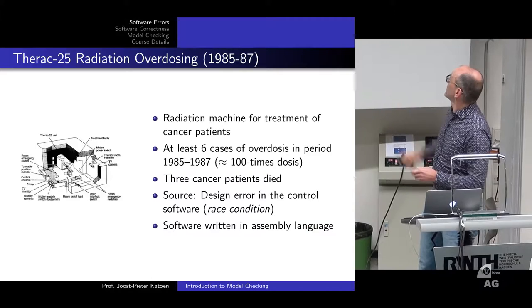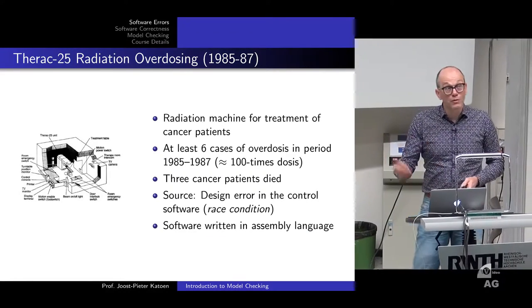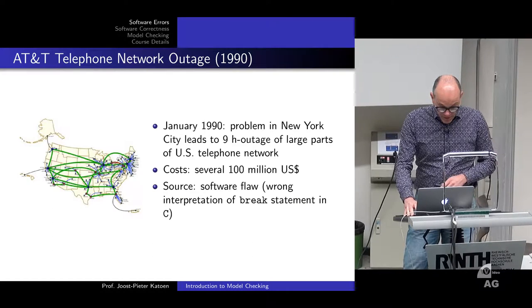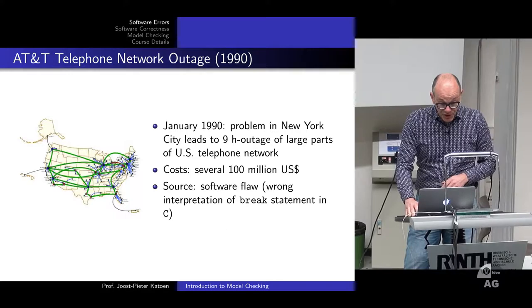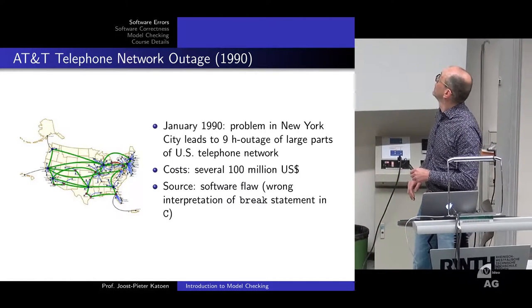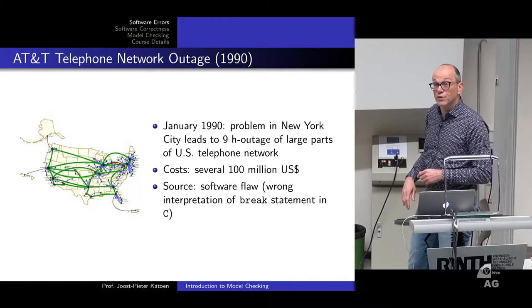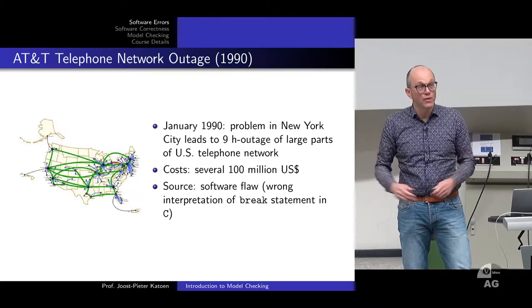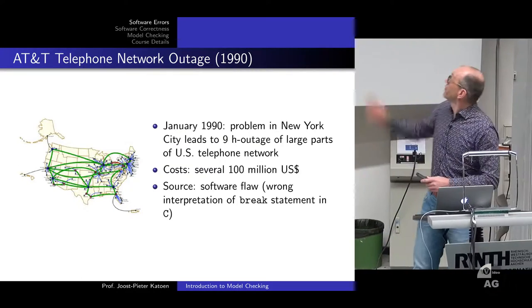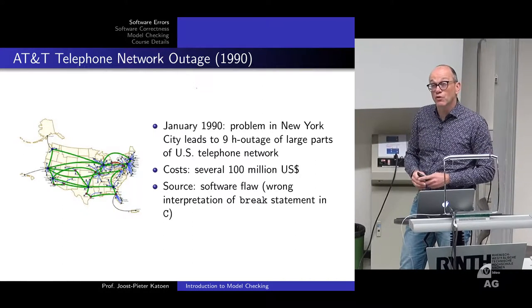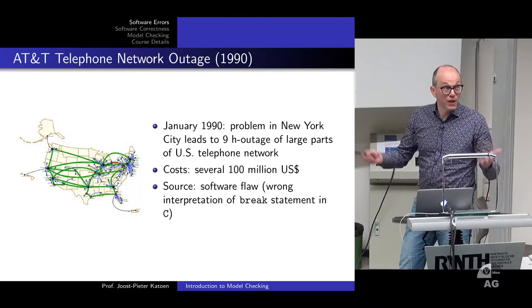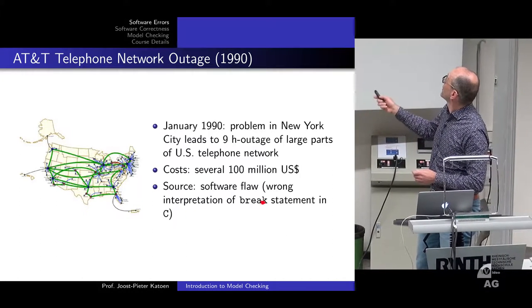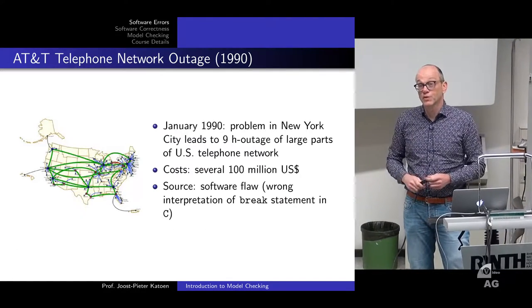At that time the software was written in a kind of assembly language, especially for performance reasons. Another example: the AT&T telephone network in the US had a big problem in New York — a nine-hour outage of large parts of the telephone network. Remember, at those days we did not have mobile phones, so the telephone network was the basic means of communication. This had a severe cost: 100 million US dollars at the time. It turned out there was a bug in a piece of C code — a wrong interpretation of the break statement in a loop.